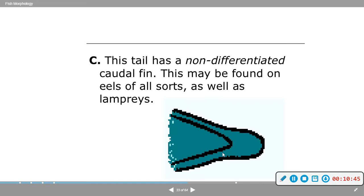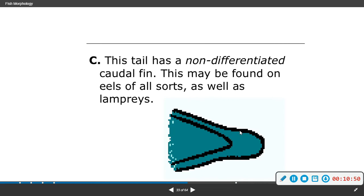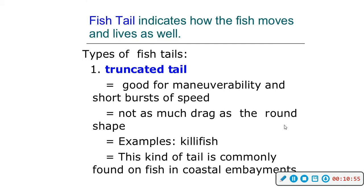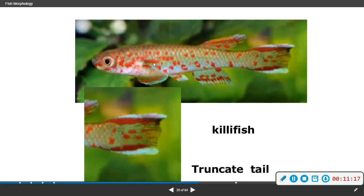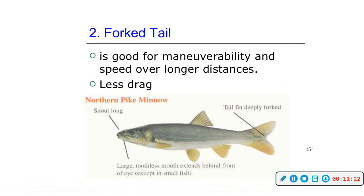The protocercal tail has a non-differentiated caudal fin and may be found on eels and lampreys. The truncate tail is good for maneuverability and short bursts of speed with less drag than a round shape — examples are killifish, commonly found in coastal embankments. The forked tail is good for maneuverability and speed over longer distances, with less drag — your pike minnow has this.